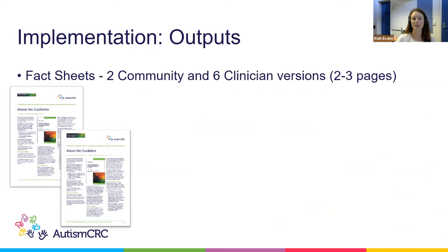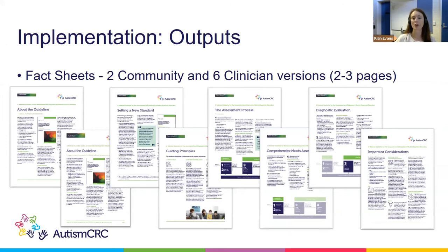We have two community fact sheets for adults and parents and caregivers, and six versions for clinicians. The clinician versions go into more detail, divided into six sections grouped by topic: background information called 'Setting a National Standard', the six guiding principles, the assessment process and how the components fit together, the comprehensive needs assessment covering functioning and medical evaluation, the diagnostic evaluation commencing with a single clinician and then a consensus team diagnosis if required, and finally important considerations for tailoring the assessment to the individual.